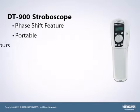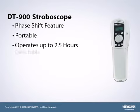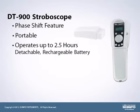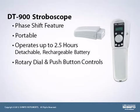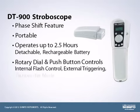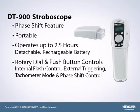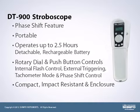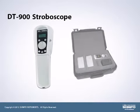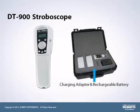The unit is completely portable and operates up to 2.5 hours on its detachable, rechargeable battery. The battery is quickly detached and recharged while another battery is snapped into place. Quality and maintenance professionals will appreciate the rotary dial and push button controls for internal flash rate adjustment, external triggering, tachometer mode, and phase shift control. The push buttons rapidly increase or decrease by a factor of 2 the flashes per minute and change by degrees the flash phase. The DT-900 has a compact, impact-resistant, and rugged enclosure that withstands demanding usage. Units come standard with a charging adapter as well as one rechargeable battery.